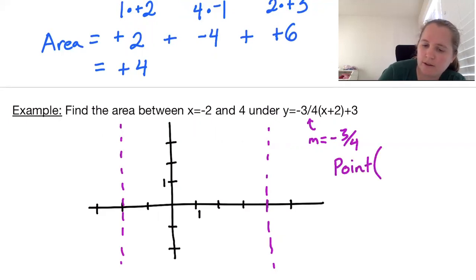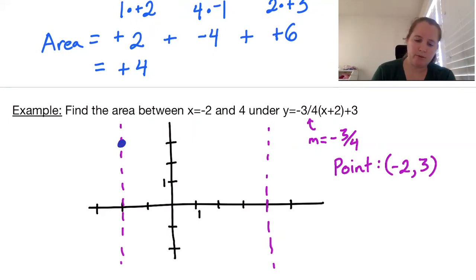We have a slope of negative 3/4 and a point at x equals negative 2. So our x value will be negative 2 and our y value is 3. So we're at the point (-2, 3). I'm going to graph this in another color.